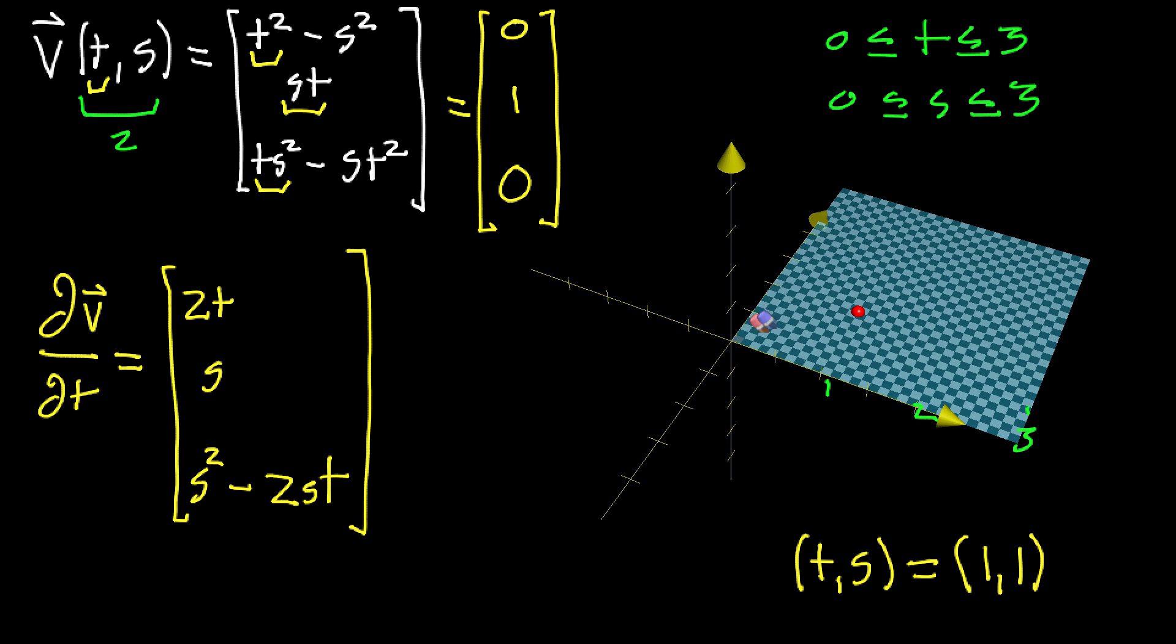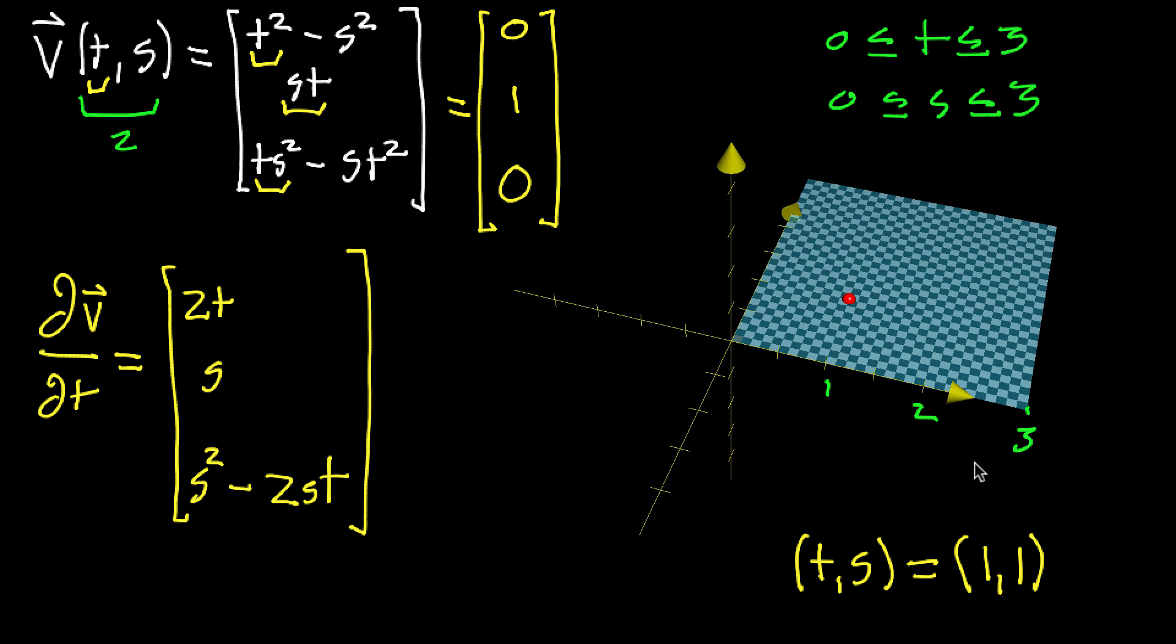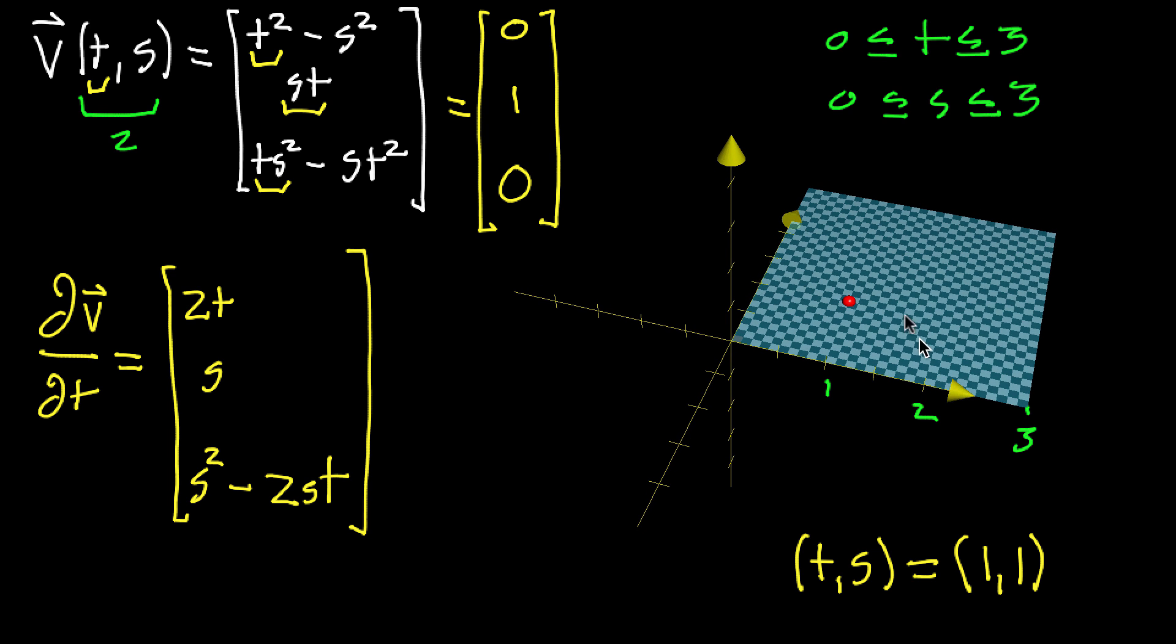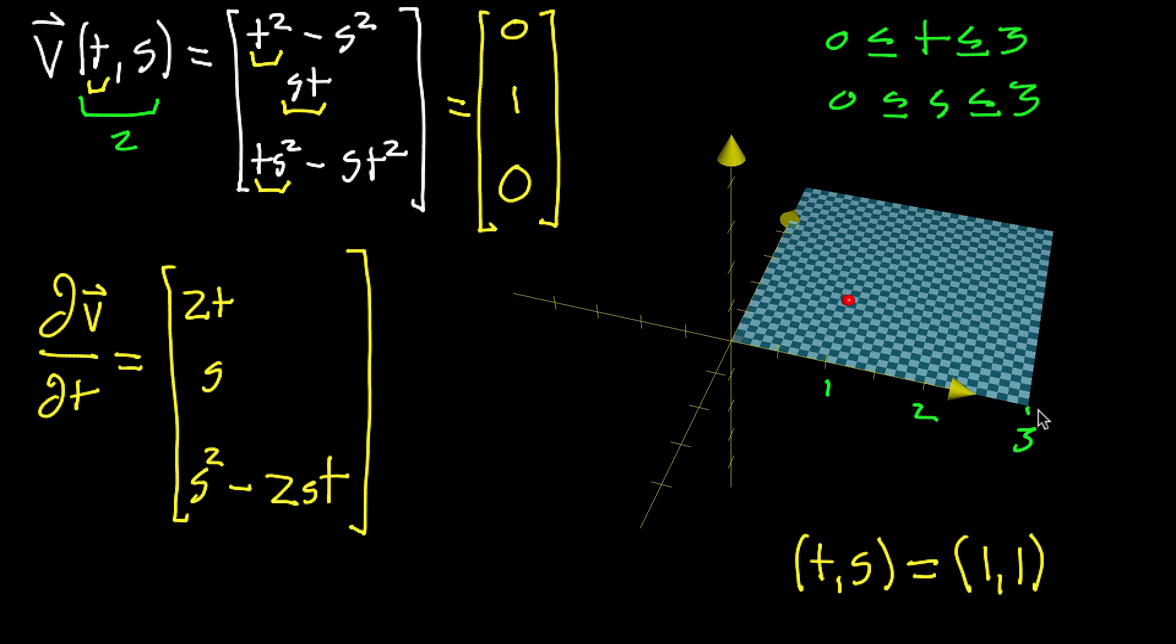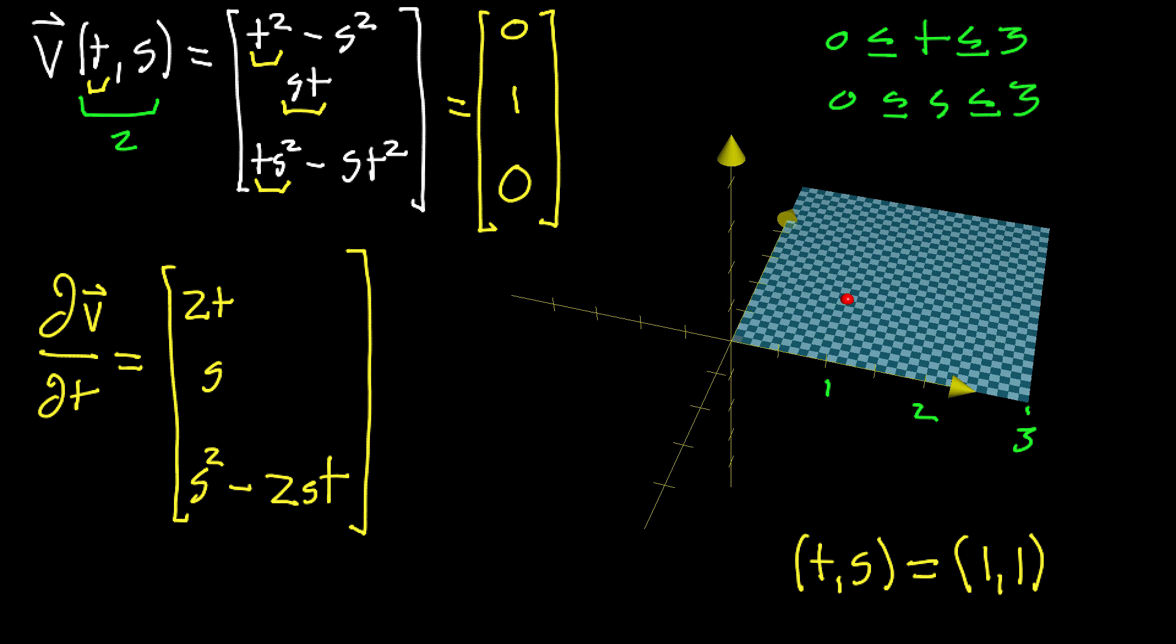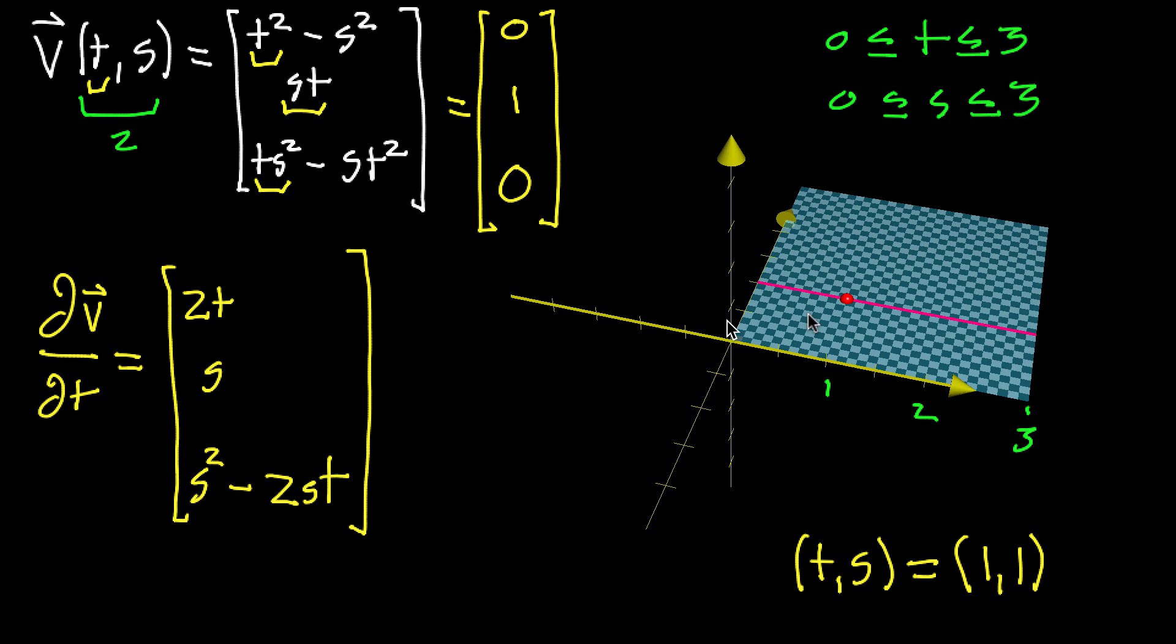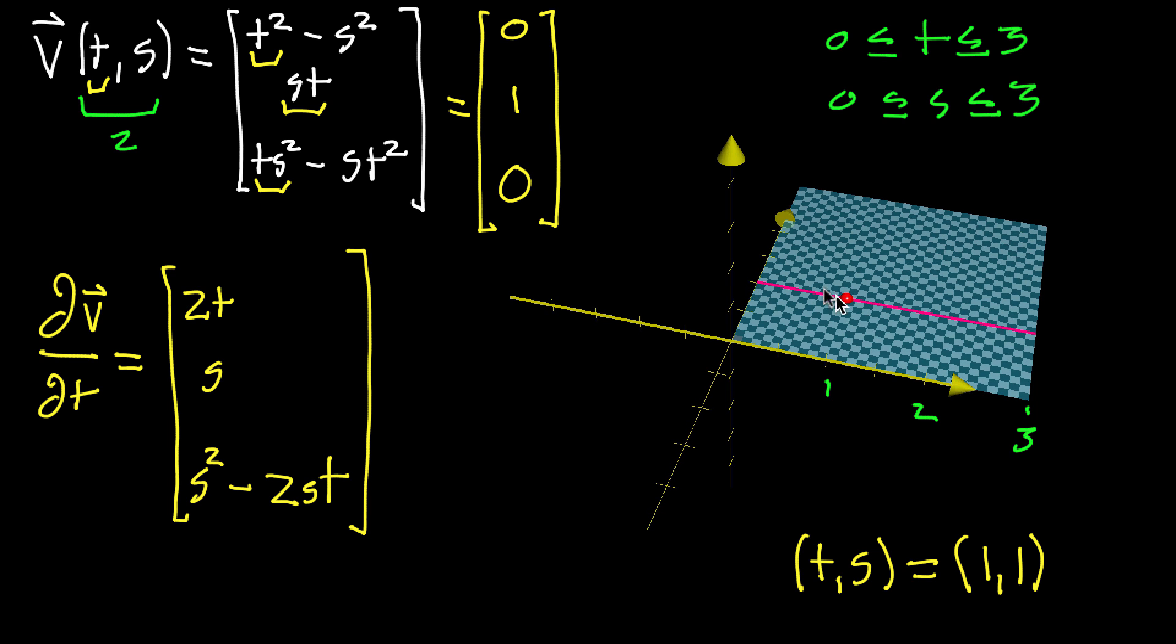Now, if we want to start thinking about what the partial derivative means, remember, this little dt, this partial t, is telling you to nudge it in the t-direction. So what does movement, just not even nudges, but just movement in general, look like in the t-direction for our little snippet of the ts-plane here? Well, the t-direction, I'm saying, is in this direction here.